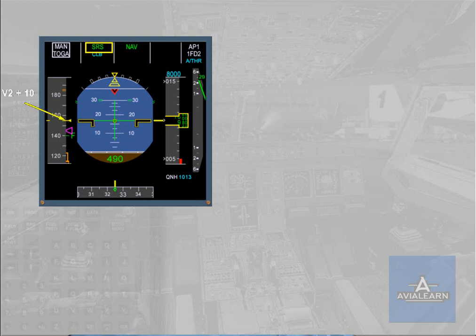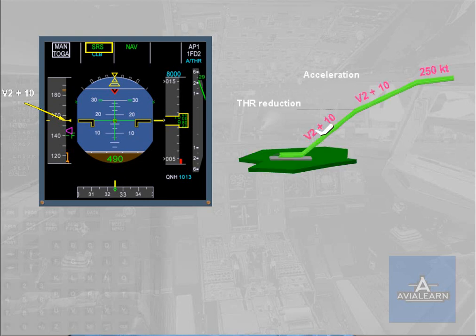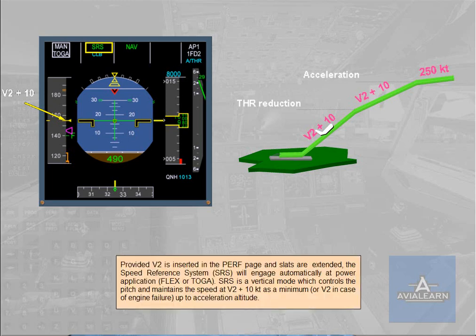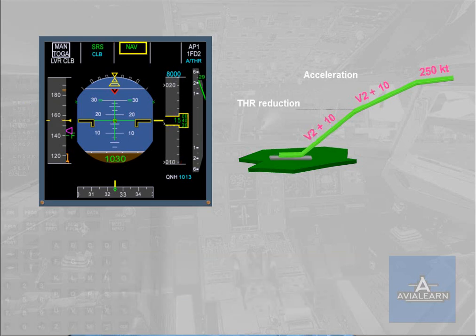The Speed Reference System is a vertical mode which controls the pitch and maintains speed at V2 plus 10 knots as a minimum, or V2 in case of engine failure, up to acceleration altitude. Navigation engages automatically around 30 feet, provided a flight plan has been inserted with runway and SID.